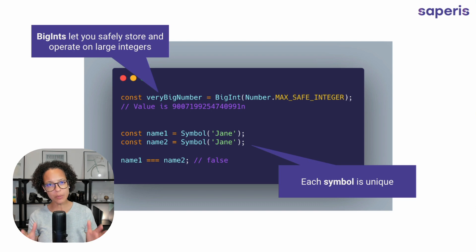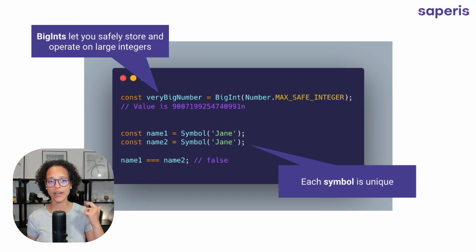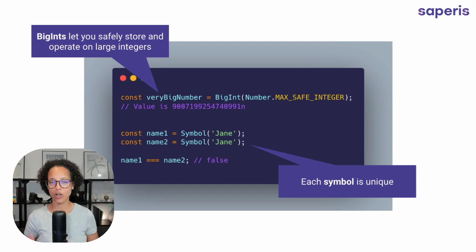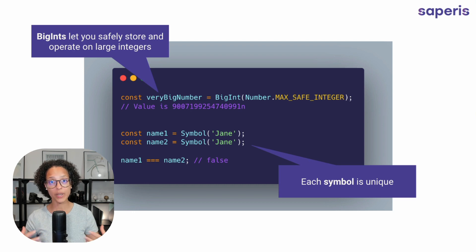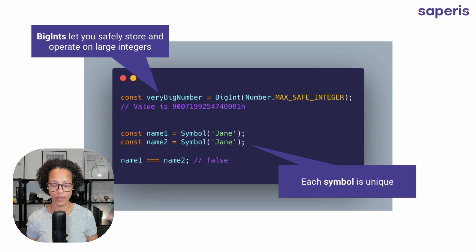Very important: the last four data types we looked at — undefined, null, BigInt, and Symbol — these are somewhat advanced JavaScript data types. So it's most likely that if you're starting out learning JavaScript, you probably won't use them in the beginning. But just to keep the topic of data types complete, I chose to cover them.